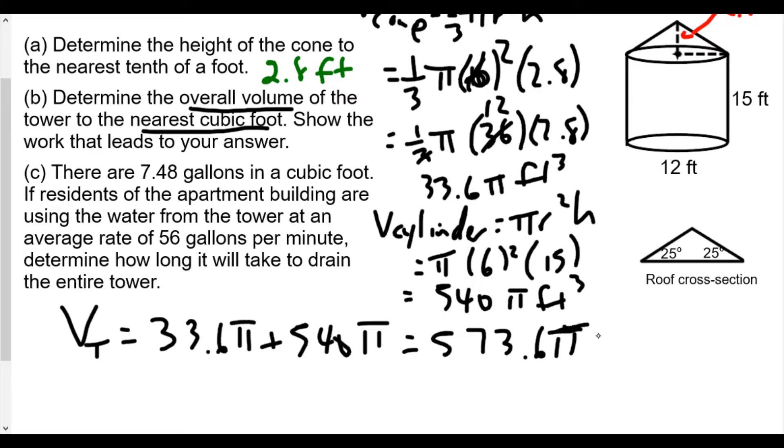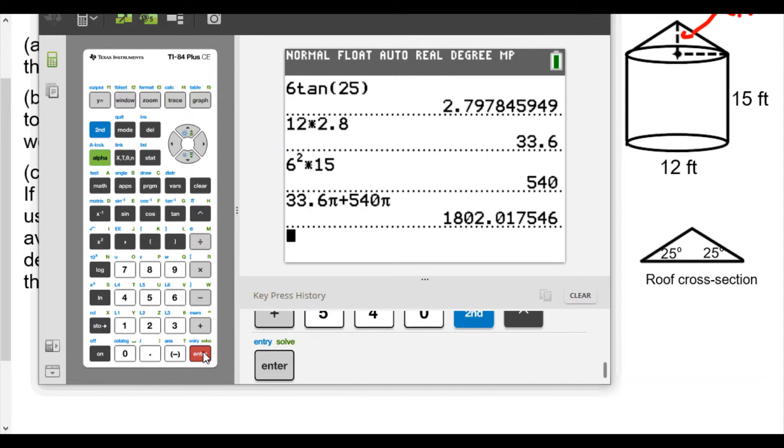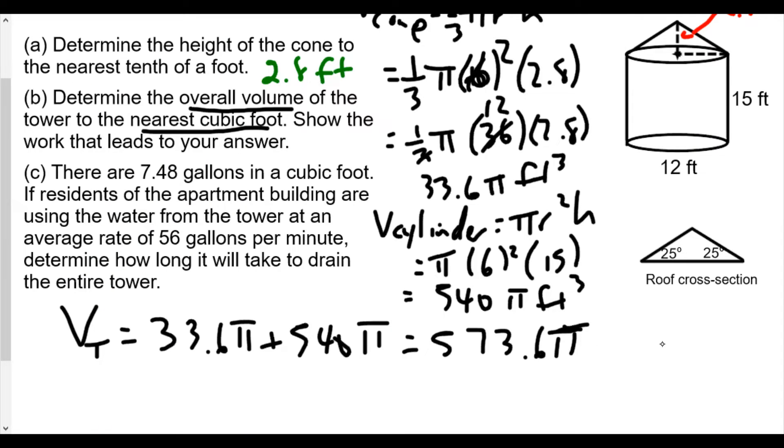But we want the nearest cubic foot, so we can add them together. 33.6π plus 540π gives us a total of 1802.017546, which to the nearest cubic foot is 1802 cubic feet. That will be the answer for our second problem: 1802 cubic feet.